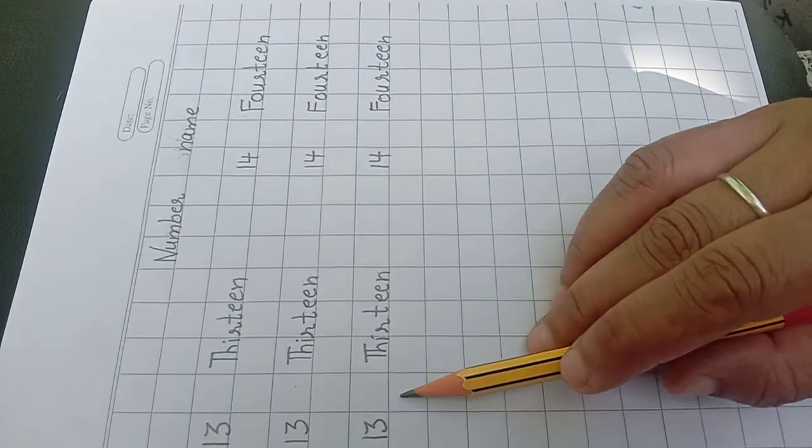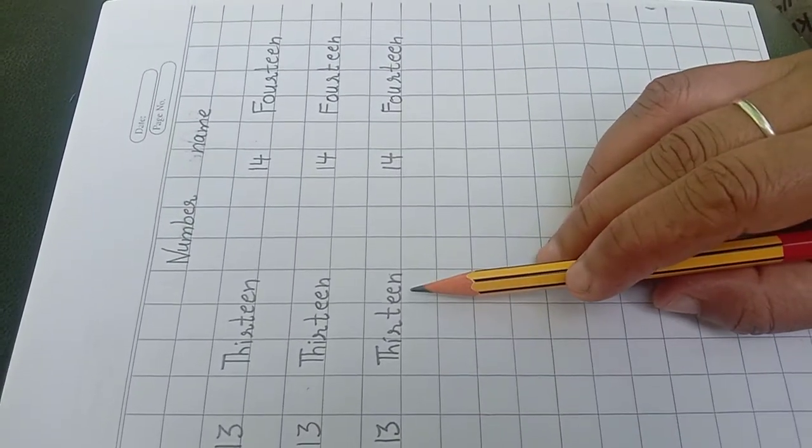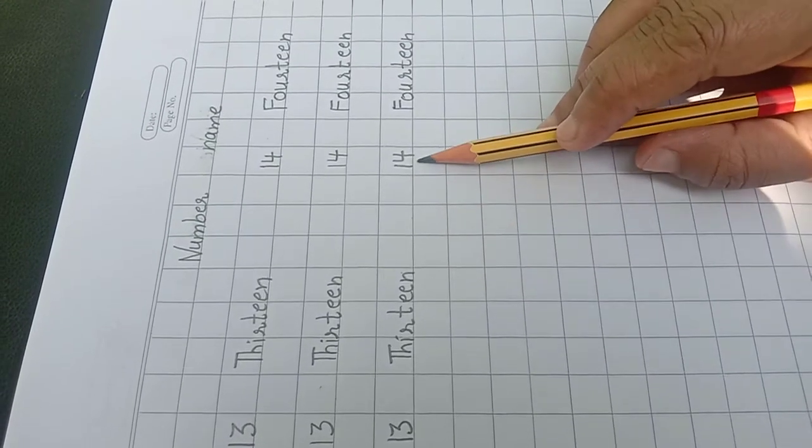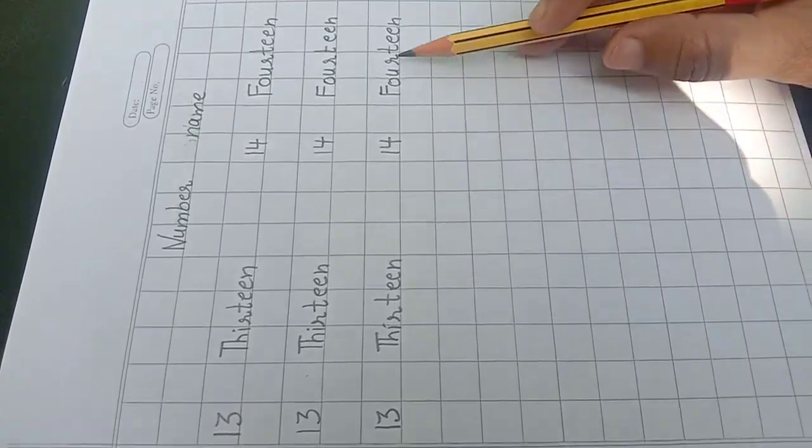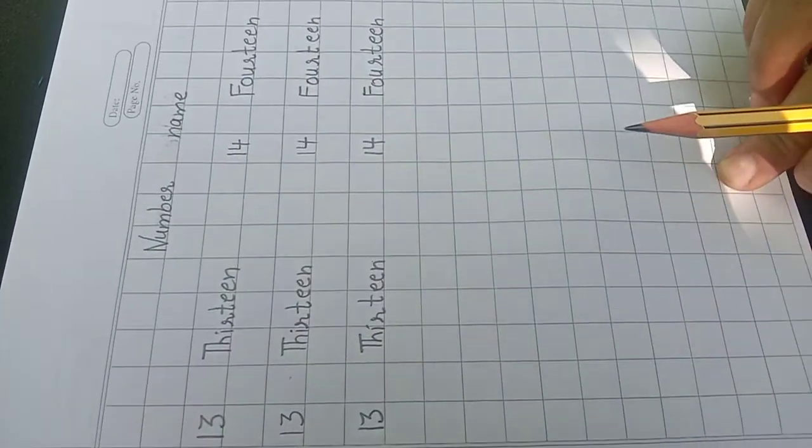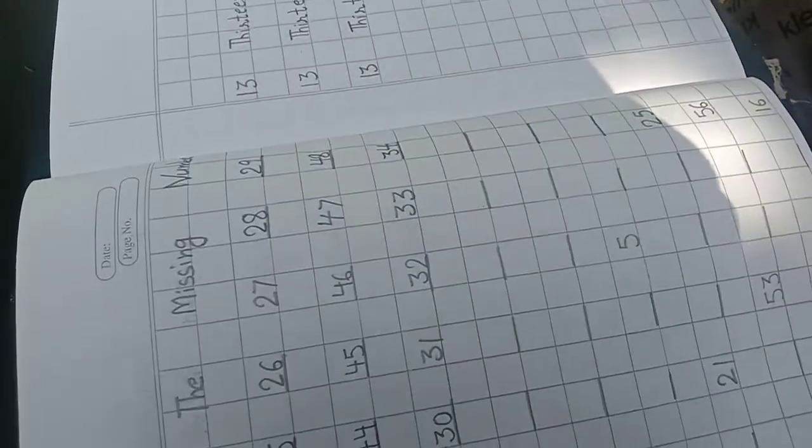You write 13, then leave one box, write spelling of 13, then leave three boxes: 1, 2, 3. Write 14, again leave one box and write spelling of 14. To complete this whole page, now come on next page.